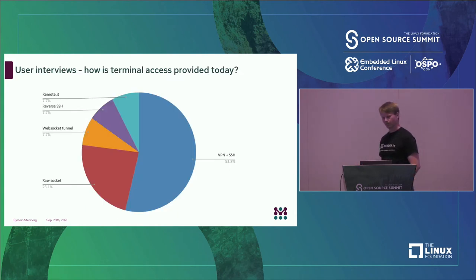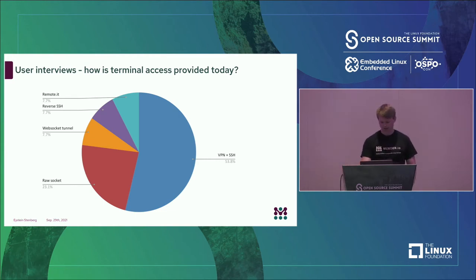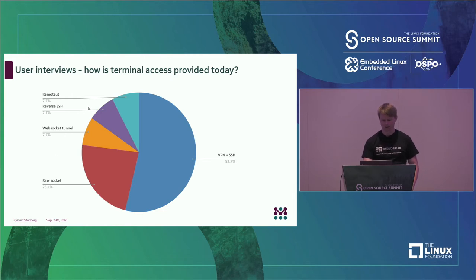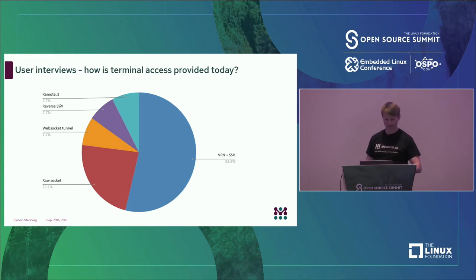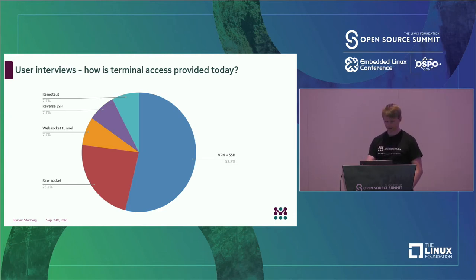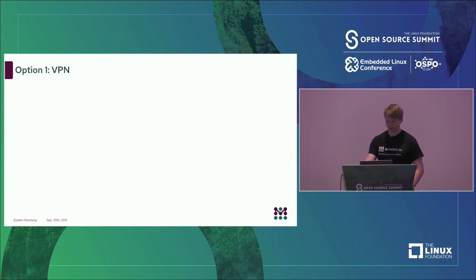We interviewed some users about how terminal access to an IoT device is being done in the field today. As you can see, VPN and SSH is a very common way to do it. There are a few other alternatives too, like raw socket, WebSocket, and reverse SSH. There is also this product — I don't have any relation to it, it was just part of the survey response — called Remoted. I'll go through all of these different alternatives and look at the trade-offs.